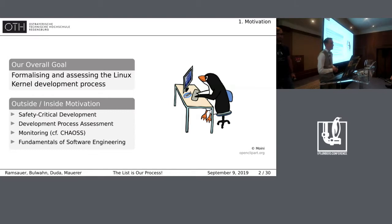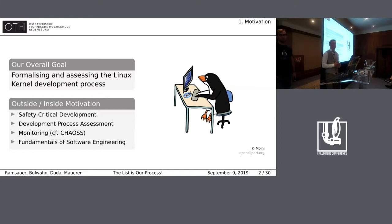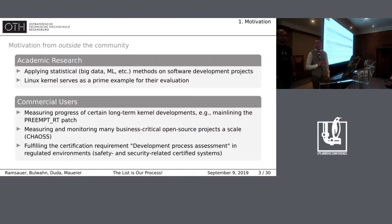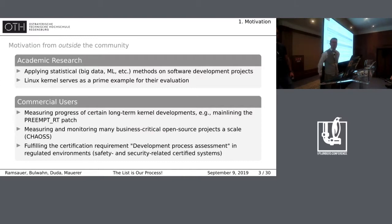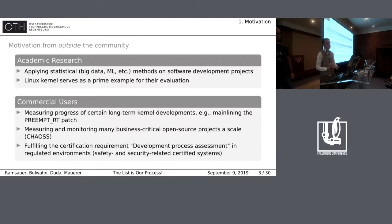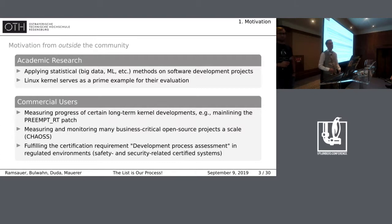There are actually two motivations for that. There's one motivation that comes from the outside of the Linux kernel community, and further motivation from the inside. From the outside perspective, there are more or less two stakeholders. The first one is academic research, showing they can apply statistical methods — big data methods, machine learning methods — on software engineering, and demonstrate how to improve the process. The Linux kernel is their prime example for evaluation.